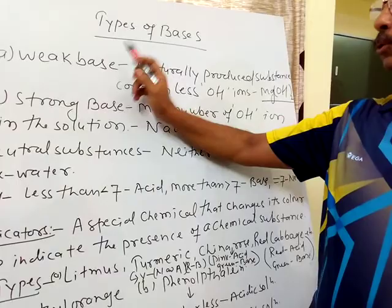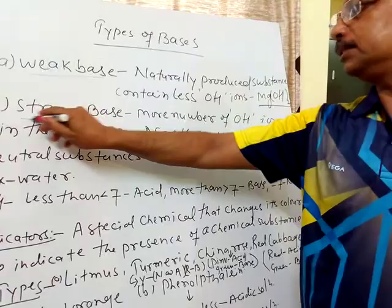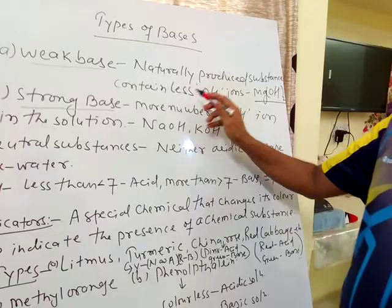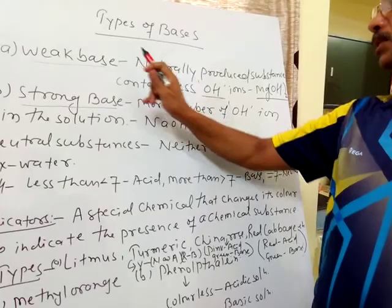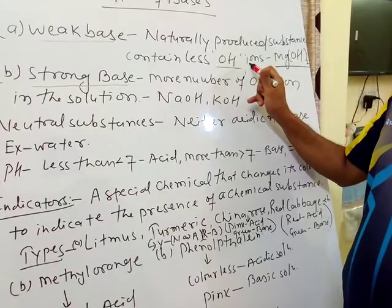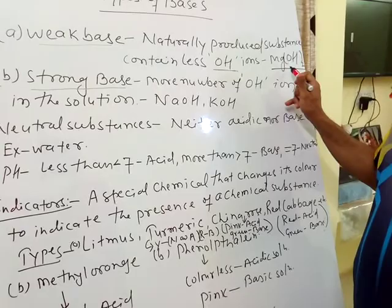That is weak base and strong base. Weak bases are those naturally produced substances which contain less hydroxide ions. For example, magnesium hydroxide, Mg(OH)₂. This is the weak base.